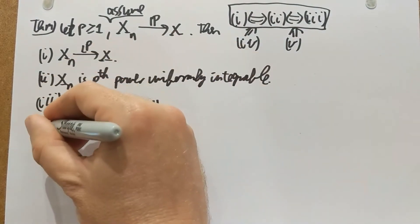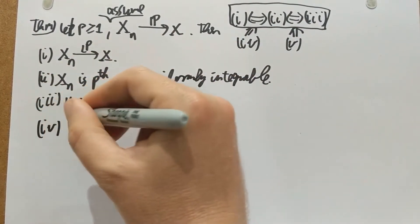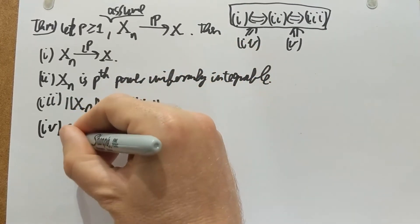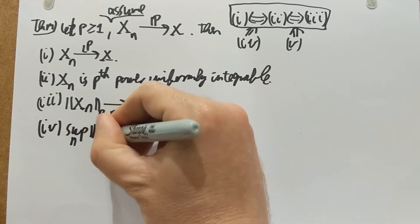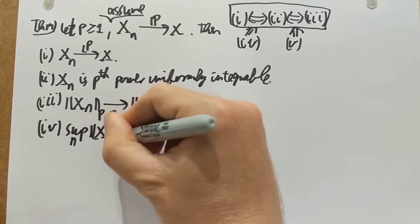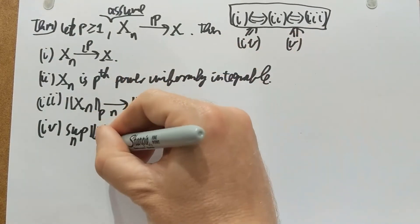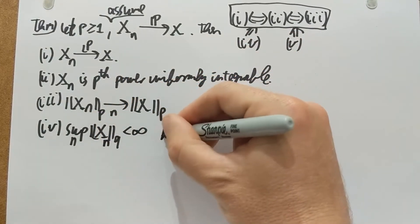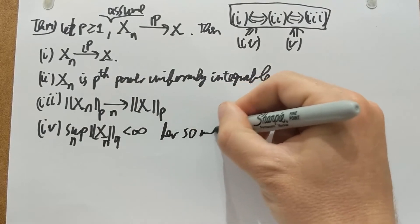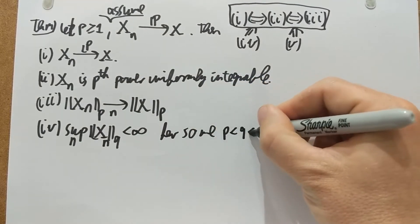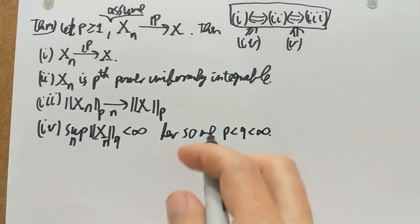Statement four is that we have bound in lq, so xn is bounded in lq for some q that's larger than p, but still finite. Okay, so p is fixed, and for some q larger than that we have boundedness in lq.